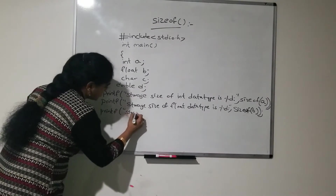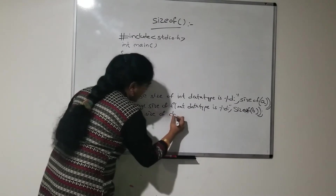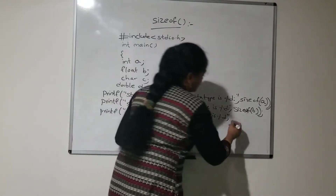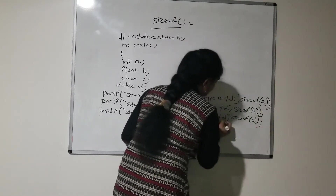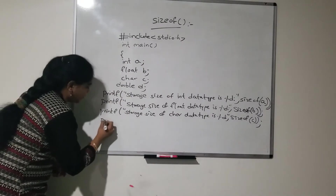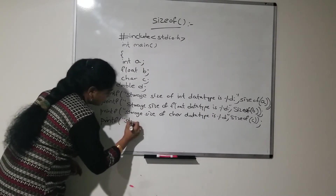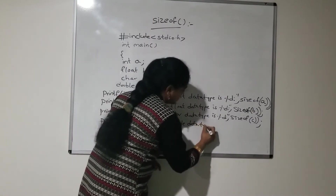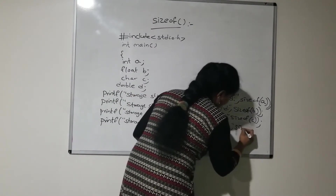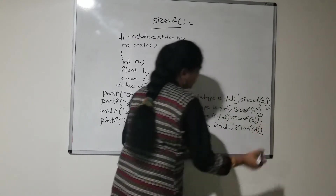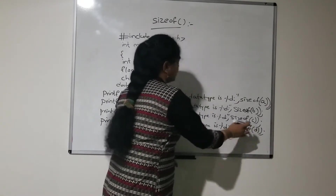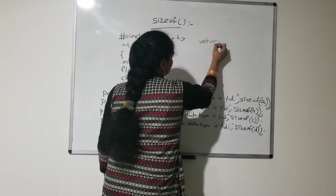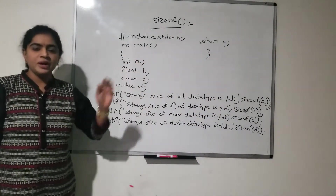printf storage size of char data type is %d sizeof(c). Similarly, for double also: storage size of double data type is %d. As here I have used int main, it has to return 0. So this is my program using sizeof function.